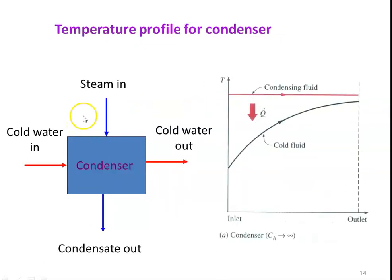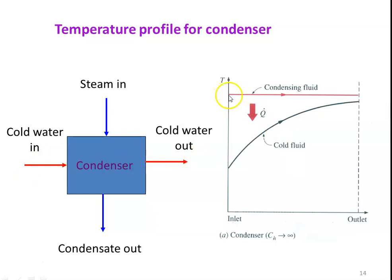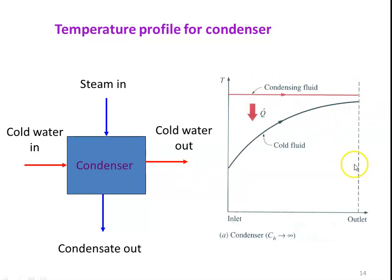Similarly, in a condenser, steam enters and is cooled and converted into condensate, which is liquid. Cold water is circulated and its temperature increases. The temperature of the condensing fluid remains constant while the cold water enters at lower temperature, absorbs heat energy from the steam, and leaves at higher temperature.